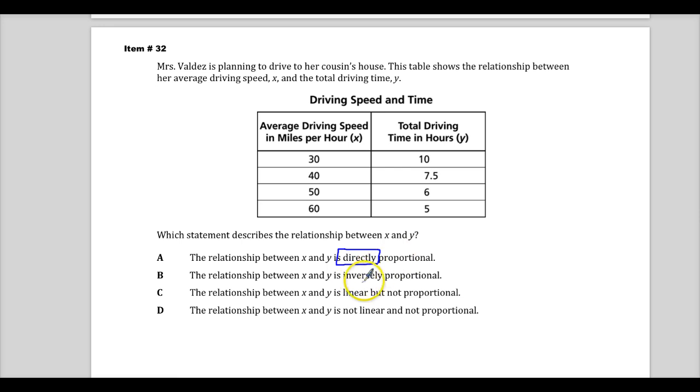So from here, an inverse would mean that one's going up and one's going down. And as you can see, the numbers get bigger, the numbers get smaller. So that's possible. So I'm going to put a little star next to this one to say it might be this one.